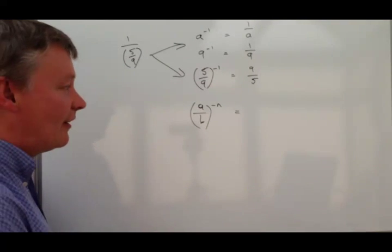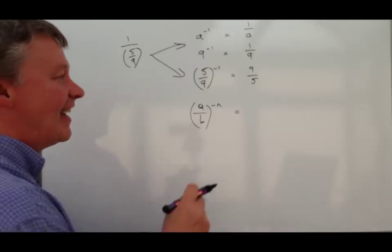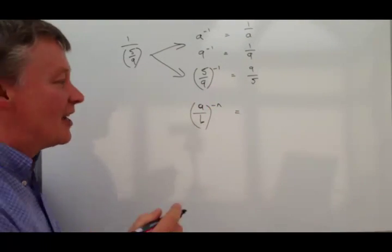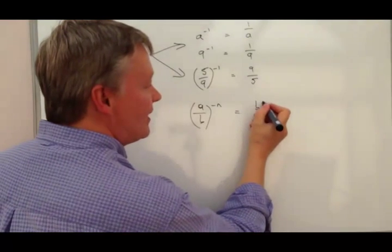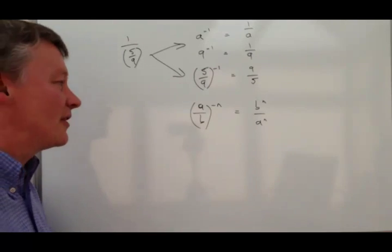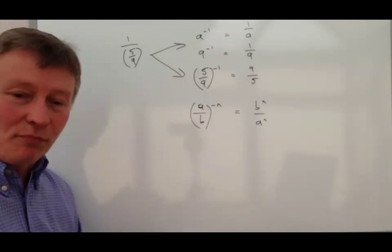Well, A over B to the power of minus n is we're going to reciprocate it and flip it around the other way. So we're going to end up with B to the power of n over A to the power of n. So we turn it upside down and use the reciprocal.